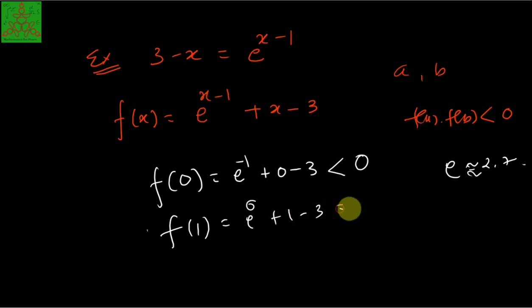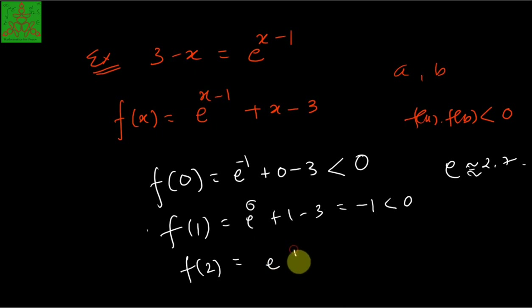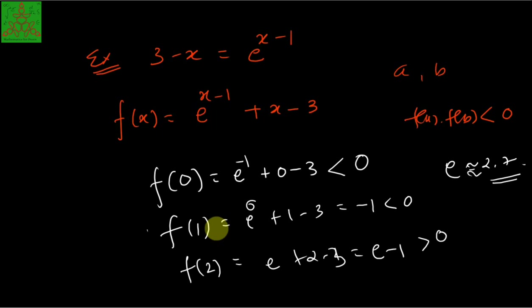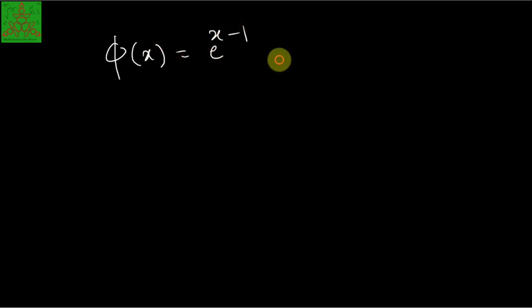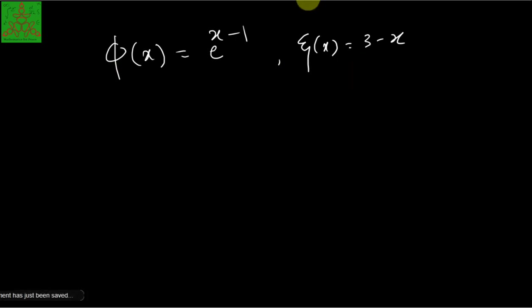Checking f(2): e^(2−1) + 2 − 3 = e − 1 ≈ 2.7 − 1 = 1.7, which is positive. So f(1) is negative and f(2) is positive, meaning the root lies between 1 and 2. We now separate the function into two parts: φ(x) = e^(x−1) and ξ(x) = 3 − x. We need to plot both graphs, and for that we use graph paper.